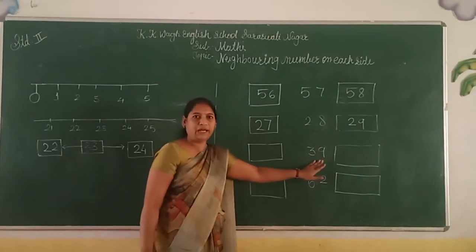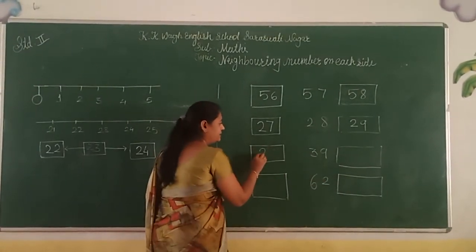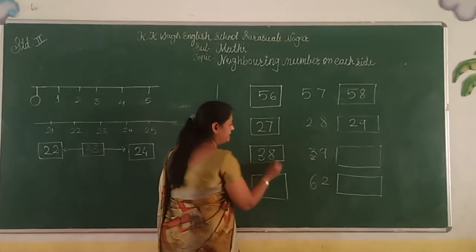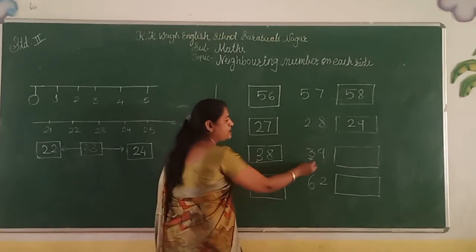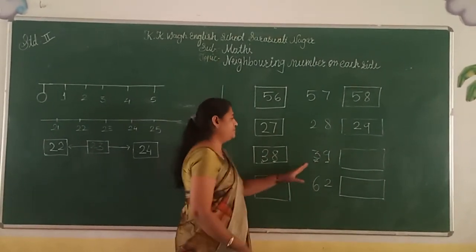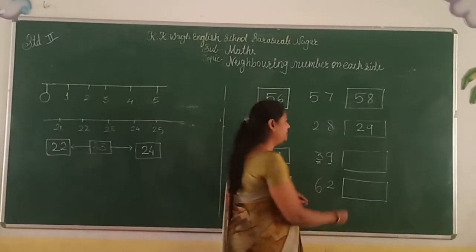Here is the number 39. The before number is 38. If we observe, the 3 number is the same here also. And the 9, before 9 there is an 8 number. Means 38 is here, and 39 after 40.